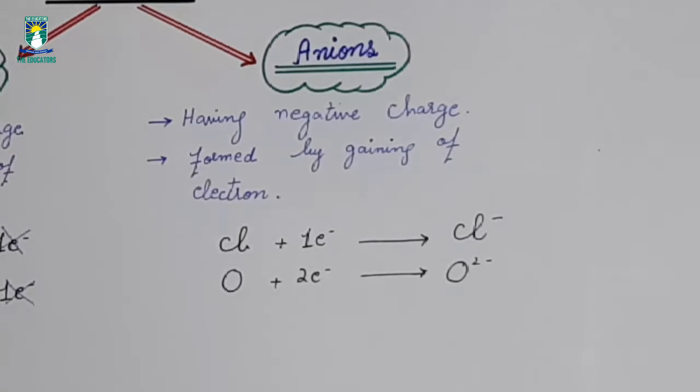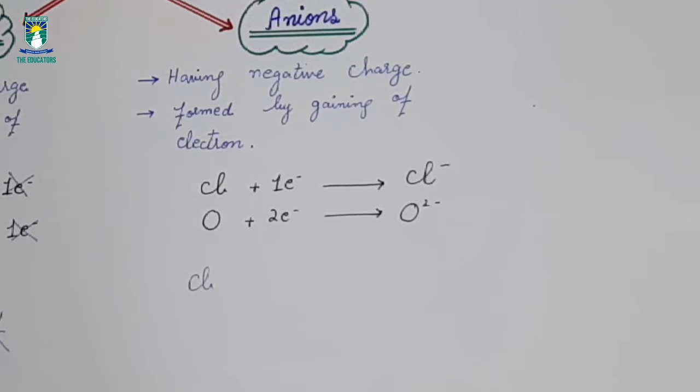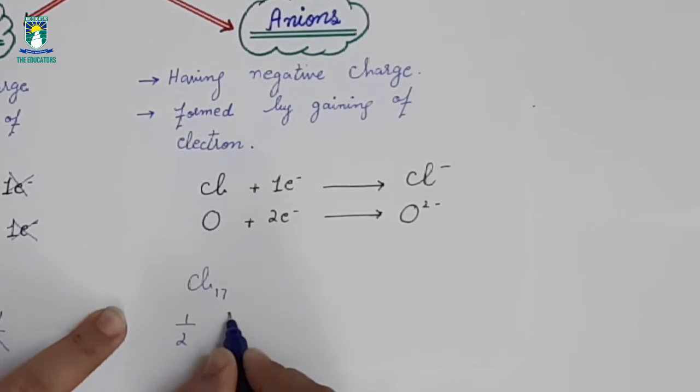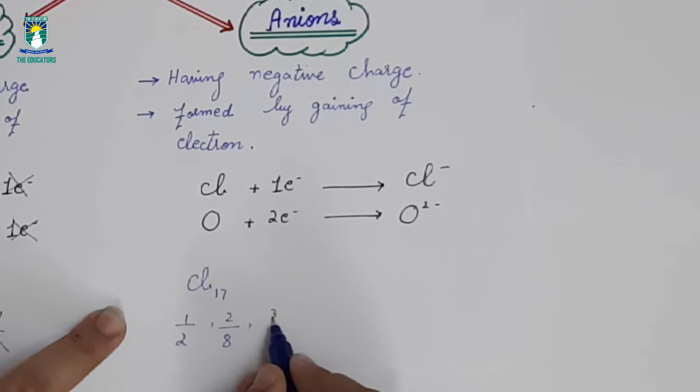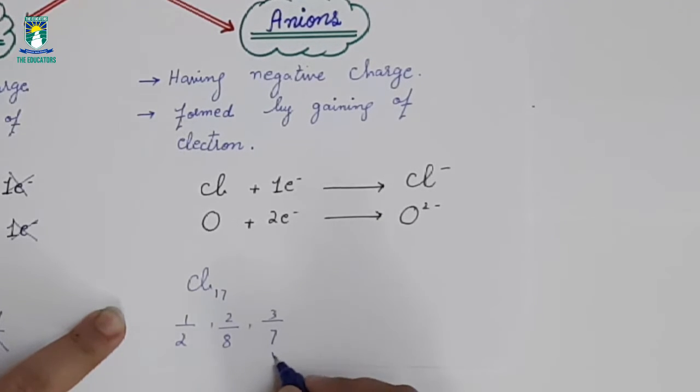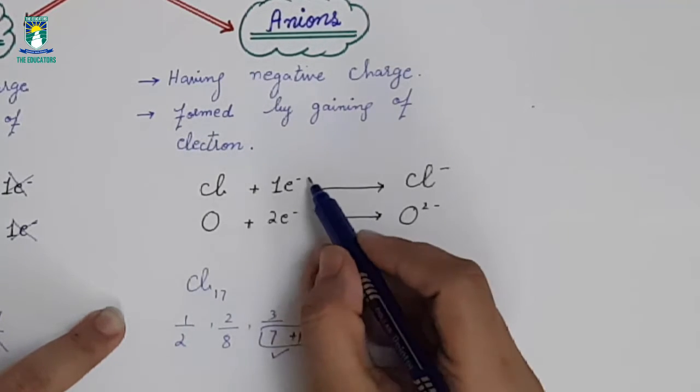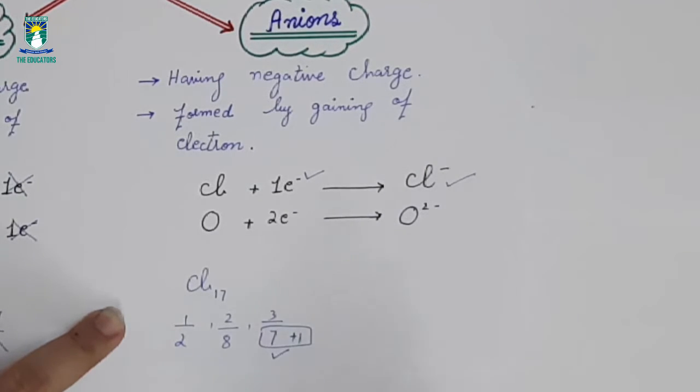Chlorine has 17 electrons. In its outermost shell, chlorine has 7 electrons. Its atomic number is 17. Distribution: first shell 2 electrons, second shell 8 electrons, third shell 7 electrons. So there is possibility that it will gain 1 electron and follow octet rule.